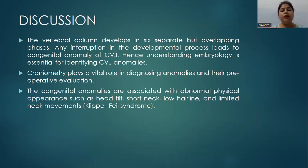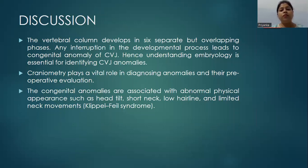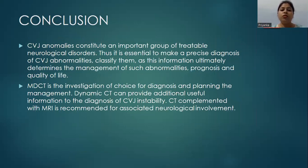The vertebral column develops in six separate but overlapping phases. Any interruption in the developmental process leads to congenital anomaly of the craniovertebral junction. Hence, understanding embryology is essential for identifying CVJ anomalies. Craniometry plays a vital role in diagnosing the anomalies and their pre-operative evaluation. The congenital anomalies are associated with abnormal physical appearance such as head tilt, short neck, low hairline, and limited neck movements.